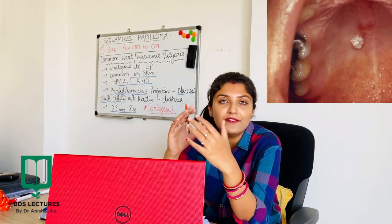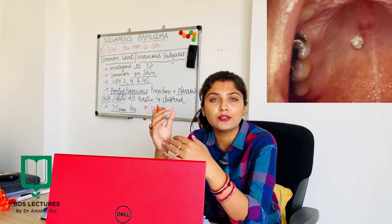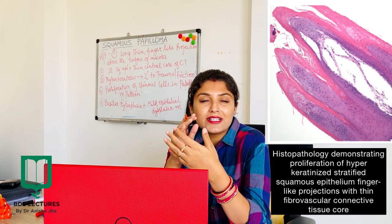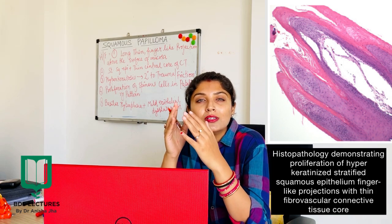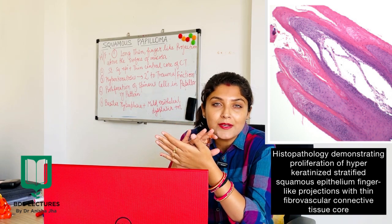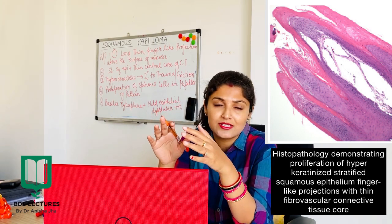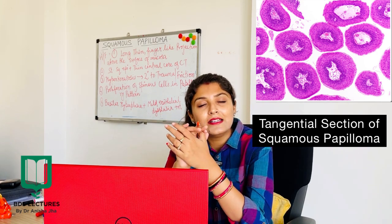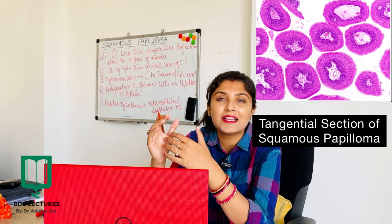Moving on to the histological features of squamous papilloma: it has a characteristic microscopic papillary appearance. It consists of long, thin finger-like projections which extend from the mucosa, each made up of stratified squamous epithelium. These projections surround a central core of connective tissue which also contains blood vessels. Some papillomas show hyperkeratosis, producing a whitish appearance — this is a secondary reaction to trauma or friction. The proliferation of the spinous cells follows the pattern of finger-like projections.